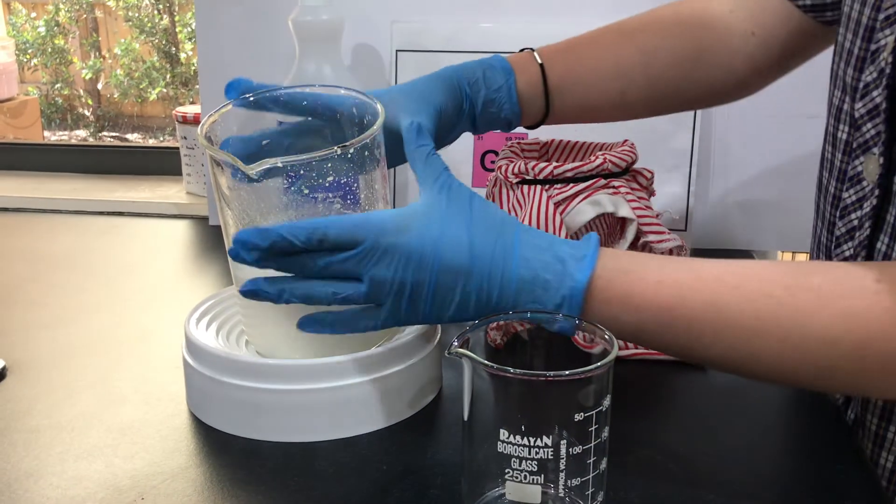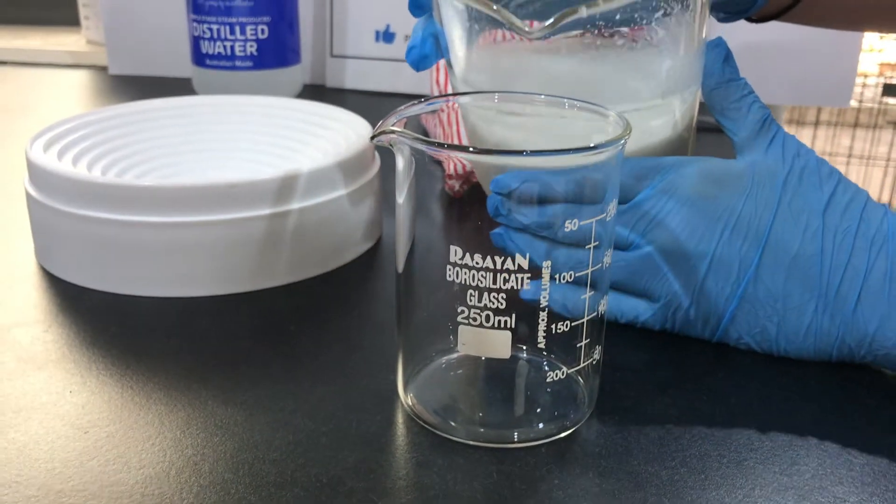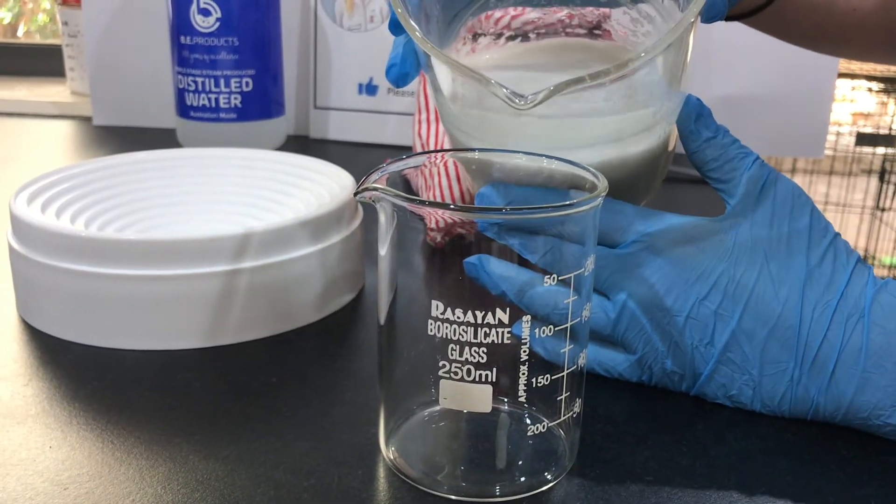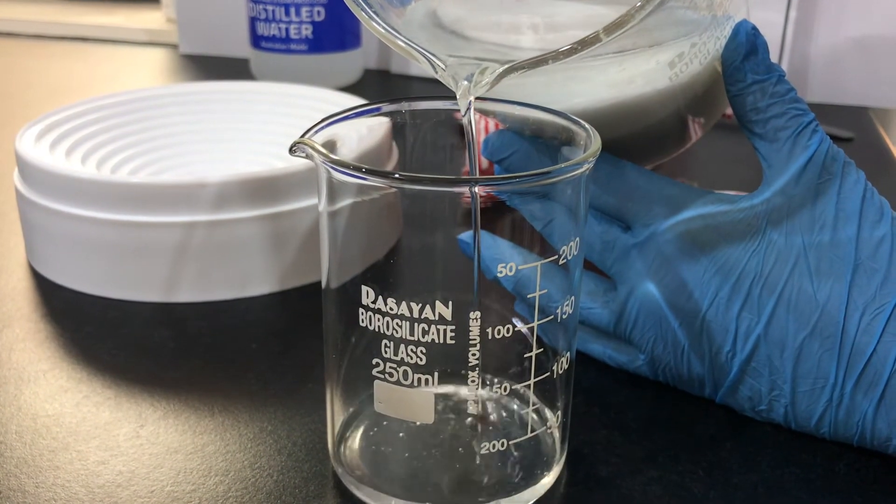We are now going to separate the calcium hydroxide which is the white precipitate at the bottom of the beaker. The best way I found to do this is to leave it overnight to allow the two products to separate. Ensure it is kept in a safe place.